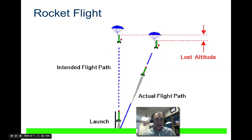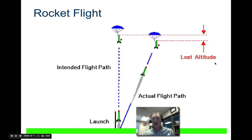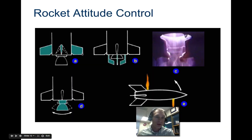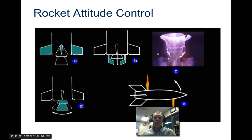If the wind carries the rocket off course, you lose altitude in that direction and the engine only fires for a certain amount of time. Once the parachute pops, it could end up very far away — like in Illinois — which we don't want.